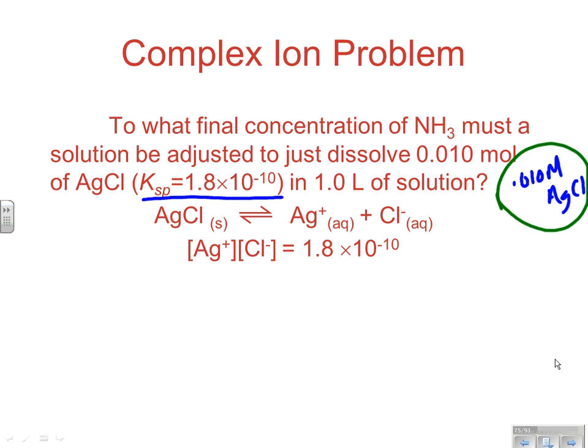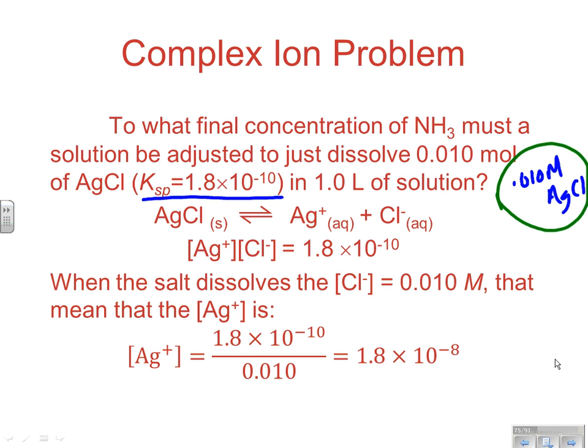We start by looking at the reaction itself. AgCl is going to react to make Ag+ and Cl- in solution. And once we reach saturation, we have an equilibrium condition. Since Ag times Cl, one to one, has to equal the Ksp, that means Ag would equal 1.8 times 10^-10 divided by the chloride. In this particular case, we want the chloride to be 0.010 molar. So the silver concentration is going to be 1.8 times 10^-8.